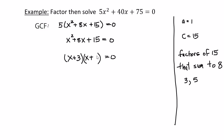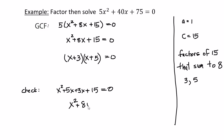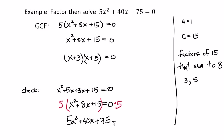The only possibilities are 3 and 5, since 1 and 15 won't work. I can verify by multiplying out: x² + 5x + 3x + 15 = 0, which gives x² + 8x + 15 = 0. That's correct. And if I multiply everything by 5 I get back my original equation 5x² + 40x + 75 = 0.